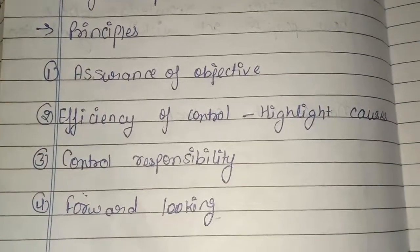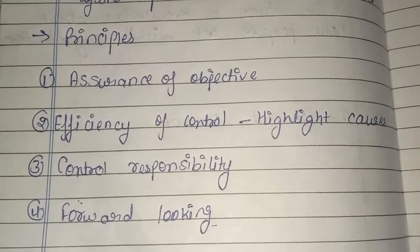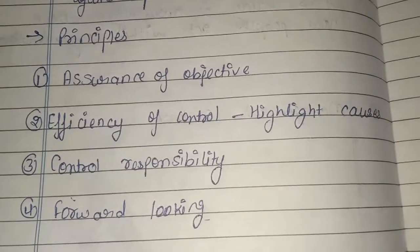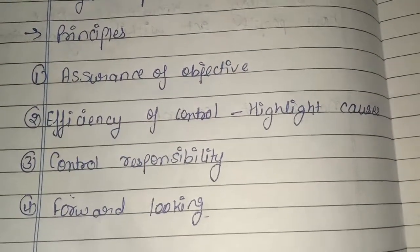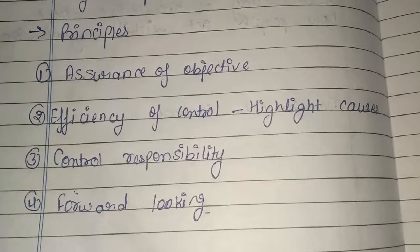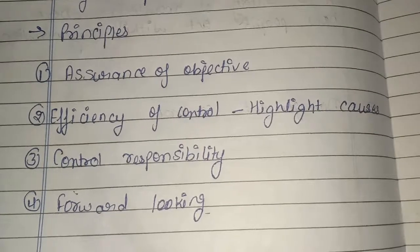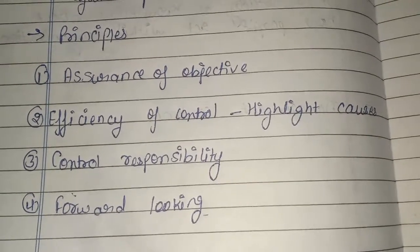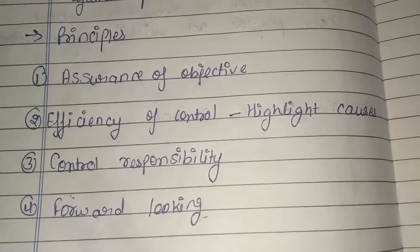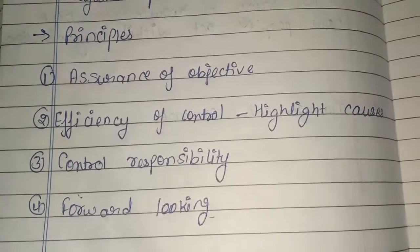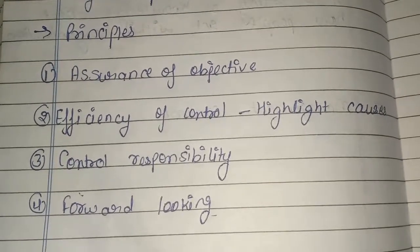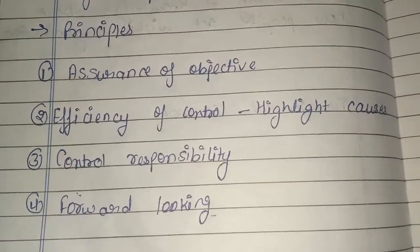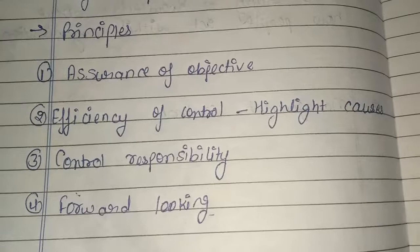Management control के कुछ principles होते हैं। सबसे पहला principle है assurance of objective। जब हम assurance of objective की बात करते हैं तो हम देखते हैं कि जो हमारा objective set किया हुआ है — मतलब जो predetermined standard हमने set किया है — उसको हम achieve कर पा रहे हैं या नहीं।